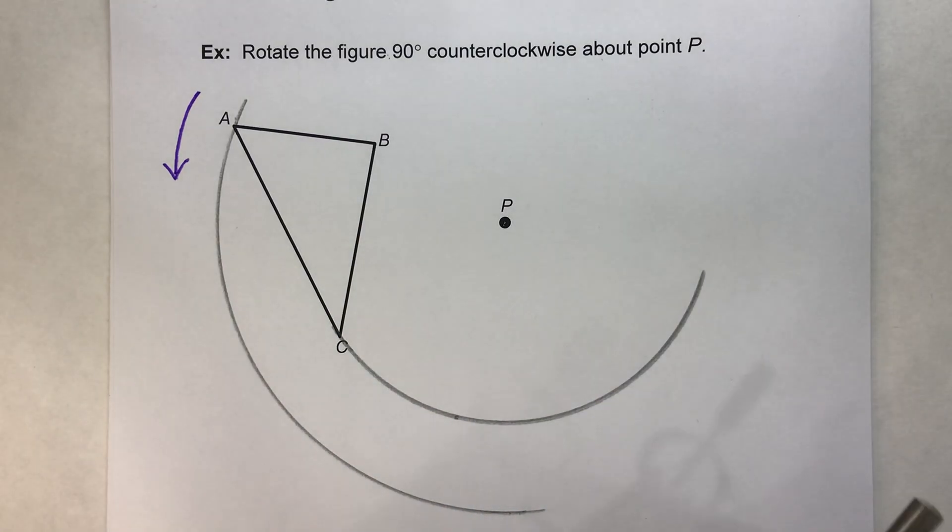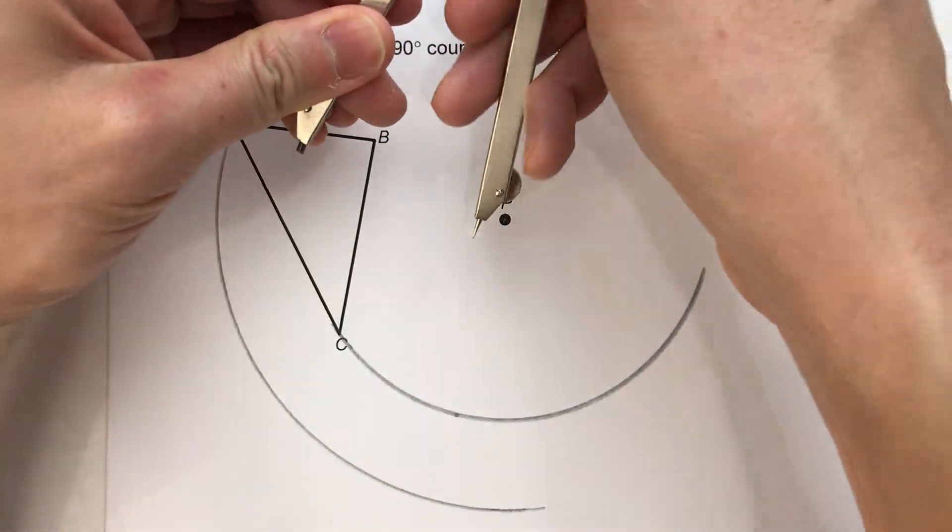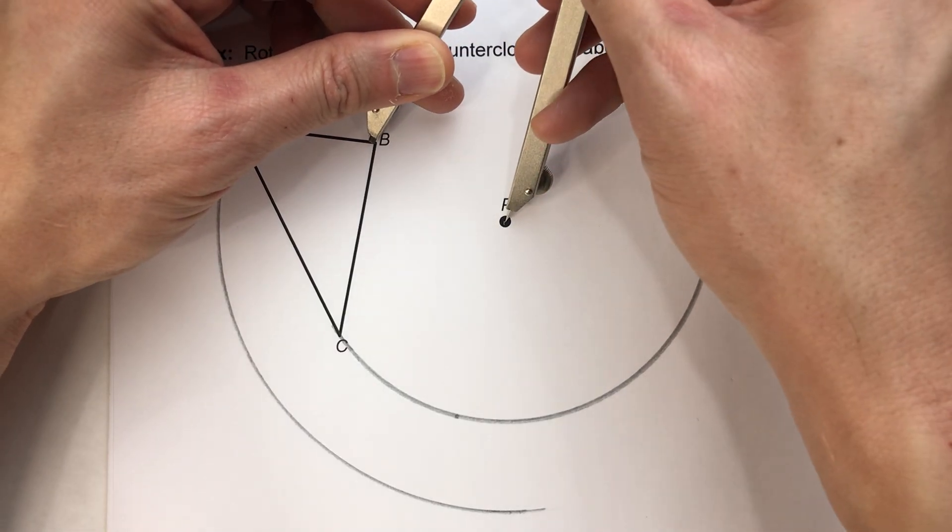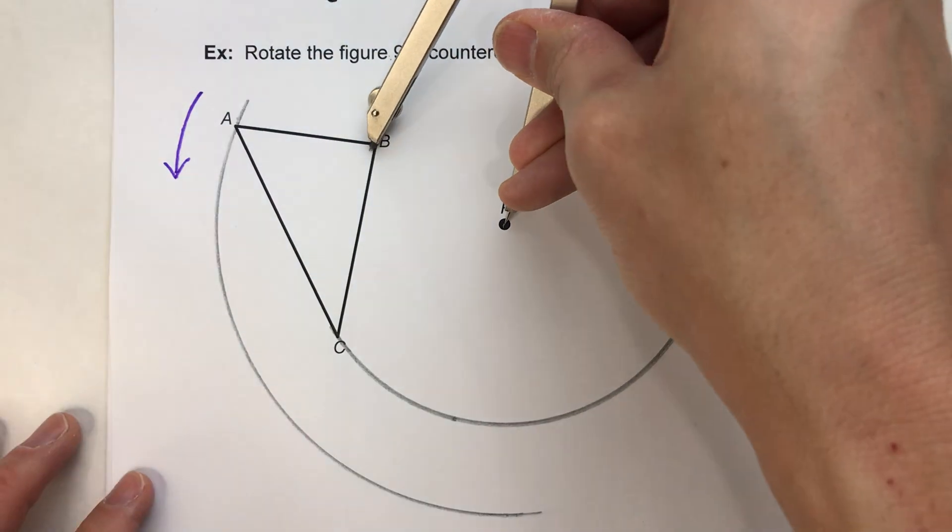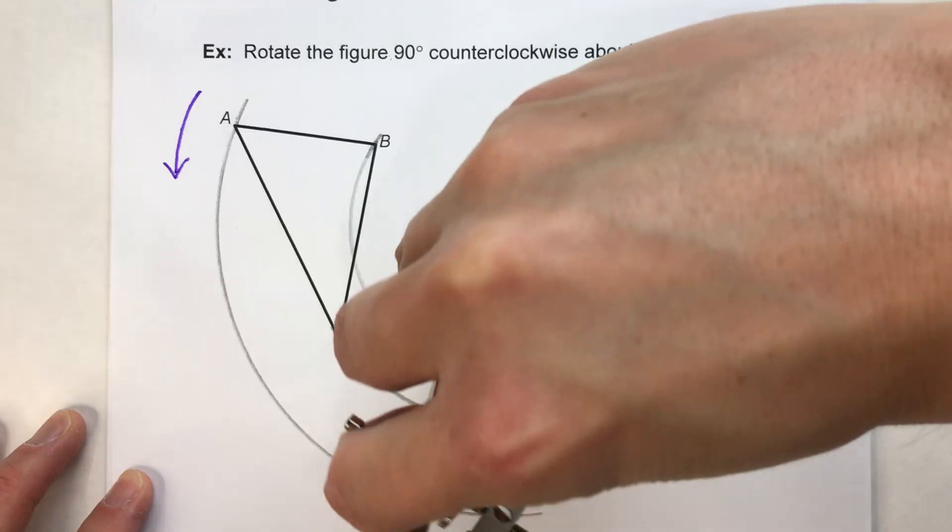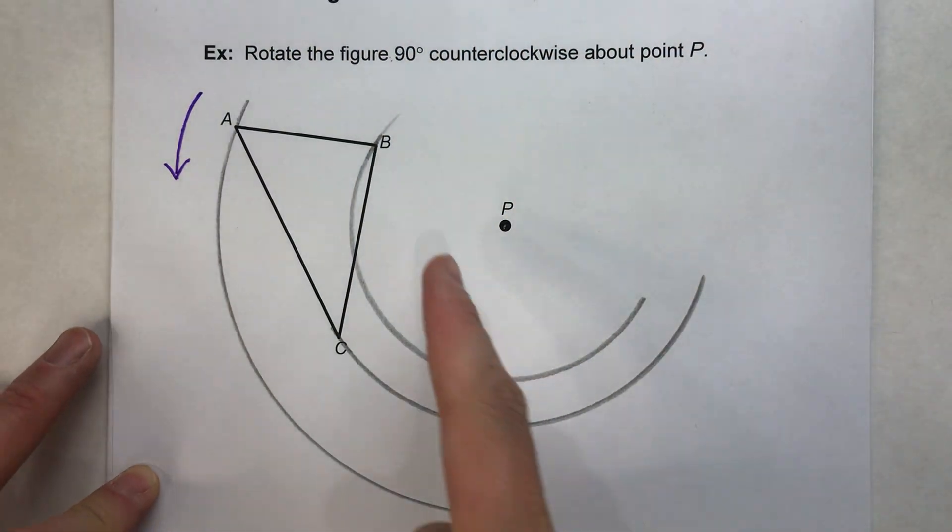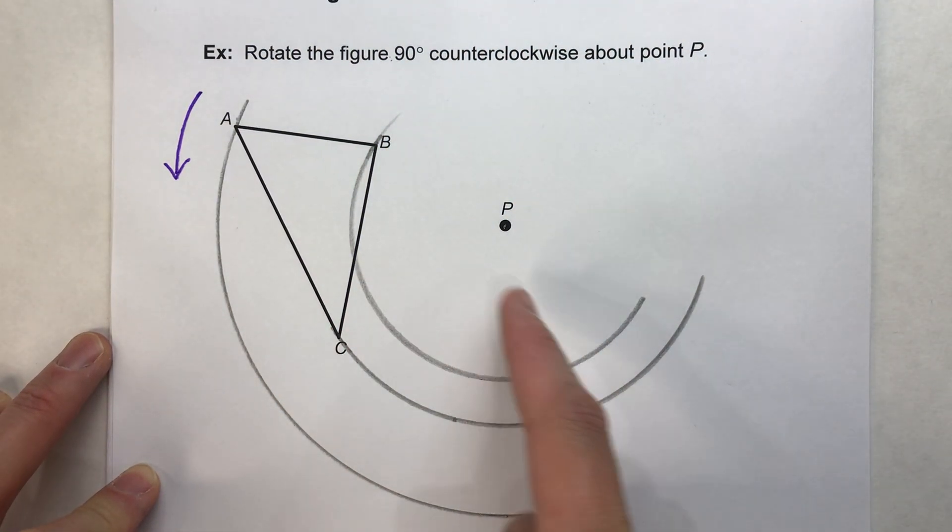And then similarly, for point B, I'll do the exact same thing. So the distance from P to B, swing an arc. And that's going to be the path of point B.